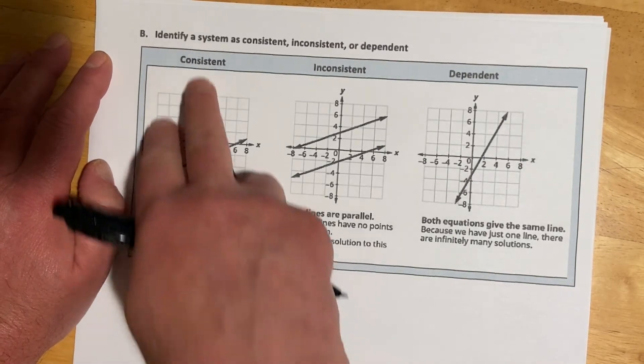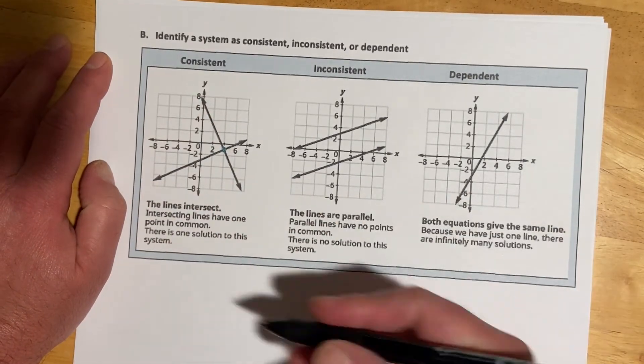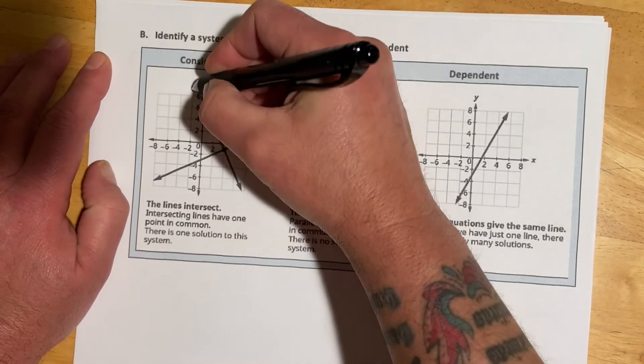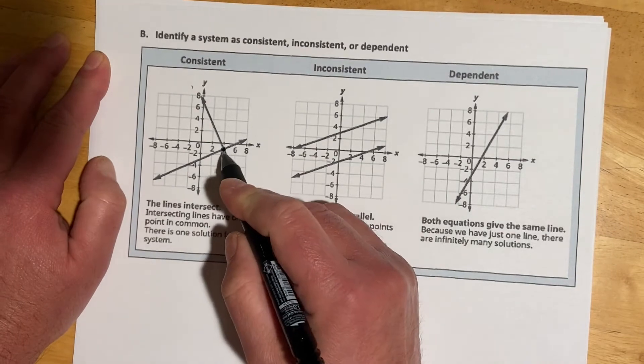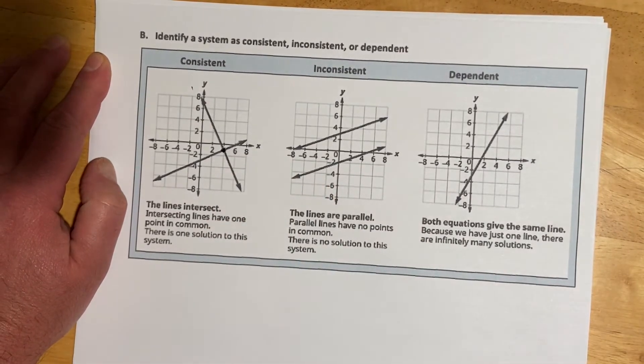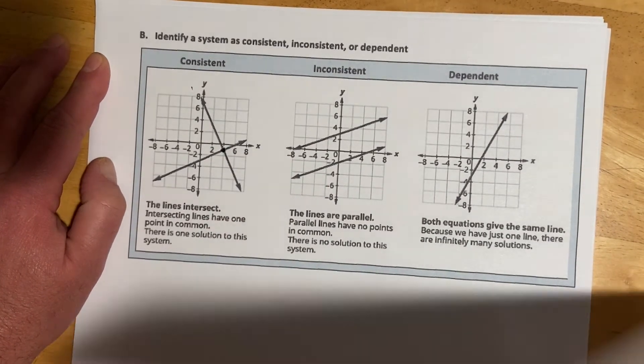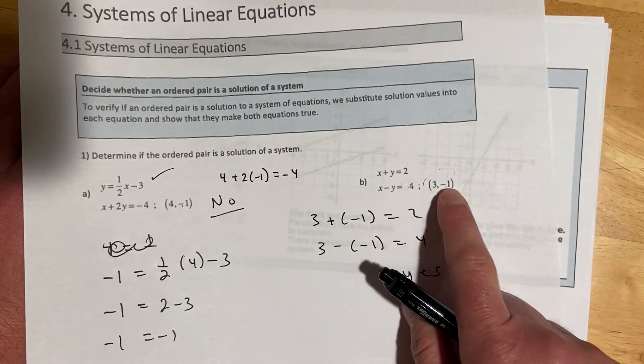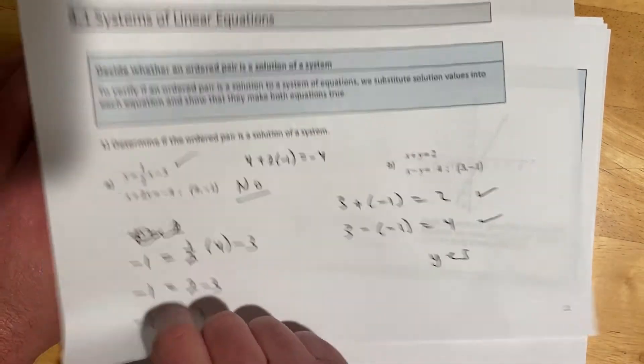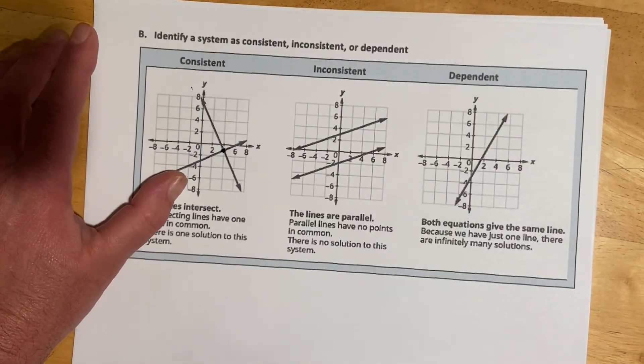So for our outcomes, we have consistent, which is where it worked. And so if I were to graph the two lines, I'd graph one and the other, and then that point right there where they intersect, that would be the point of solution. So like back in this last example, if you graph these two lines, they're going to cross at 3, negative 1. So that's an example of a consistent system.